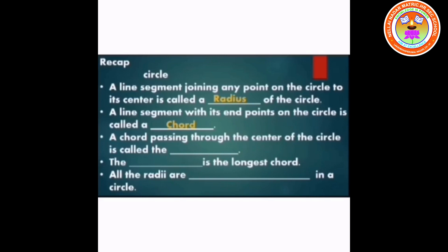The third property: a chord passing through the center of the circle is called a diameter. The fourth property: the diameter is the longest chord.